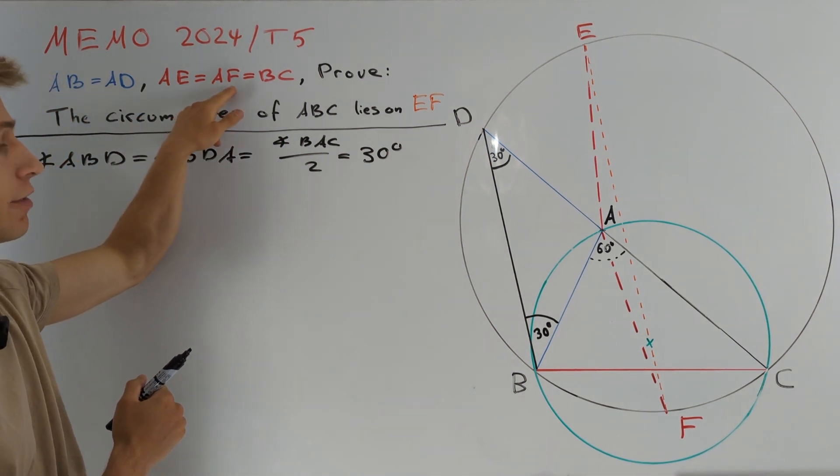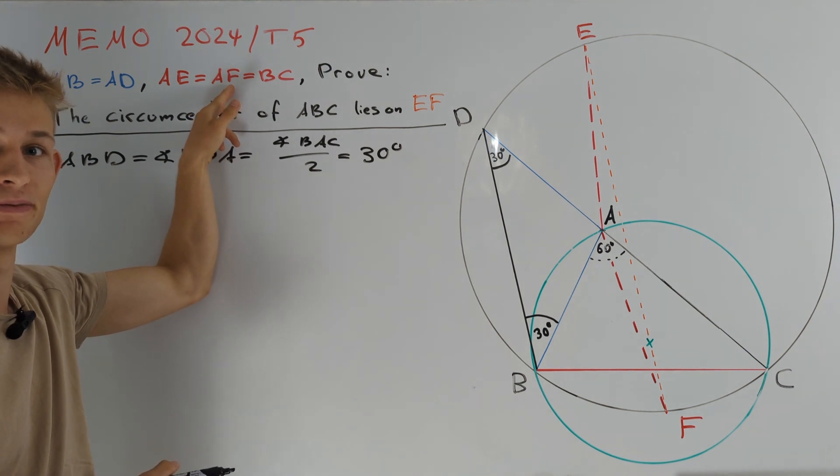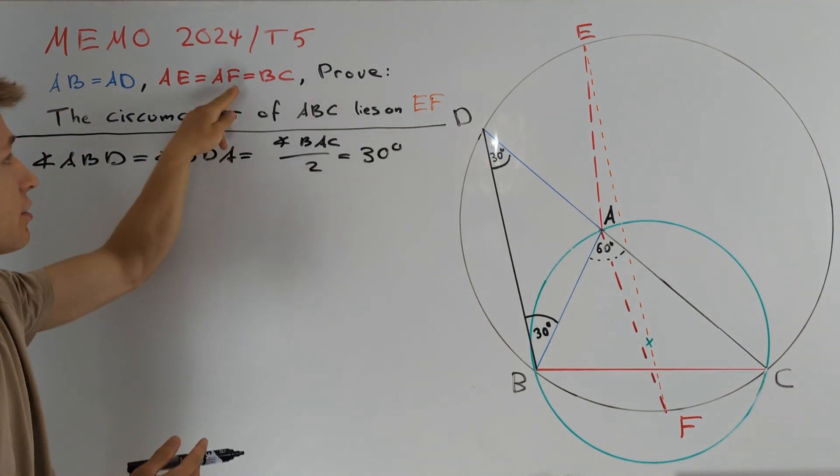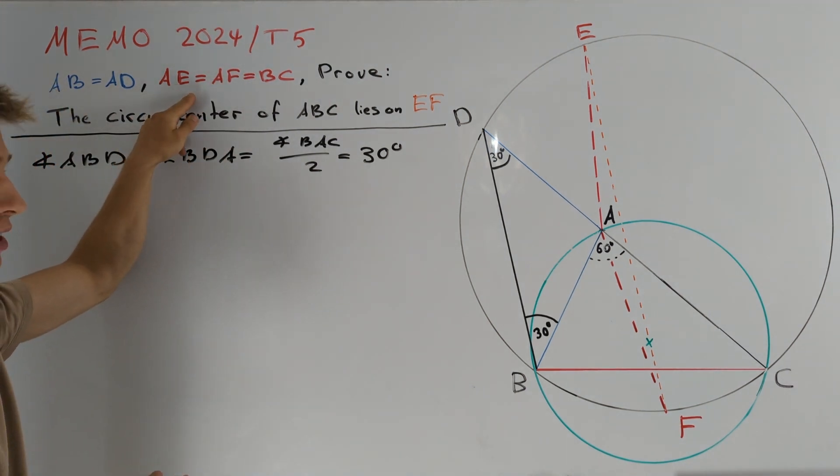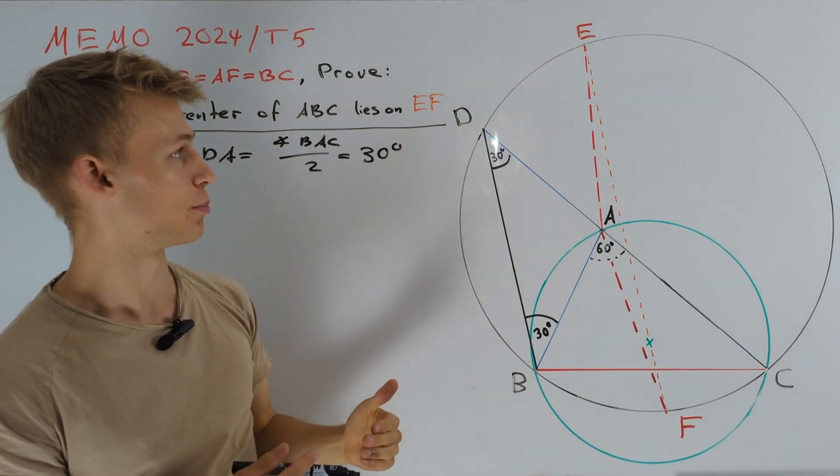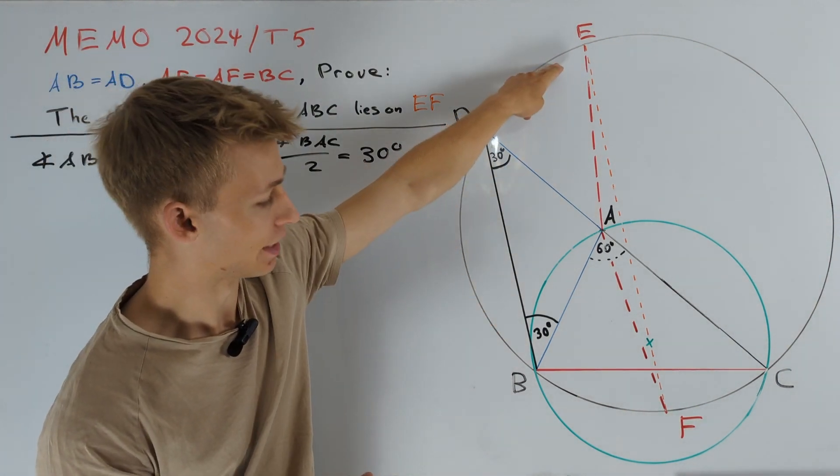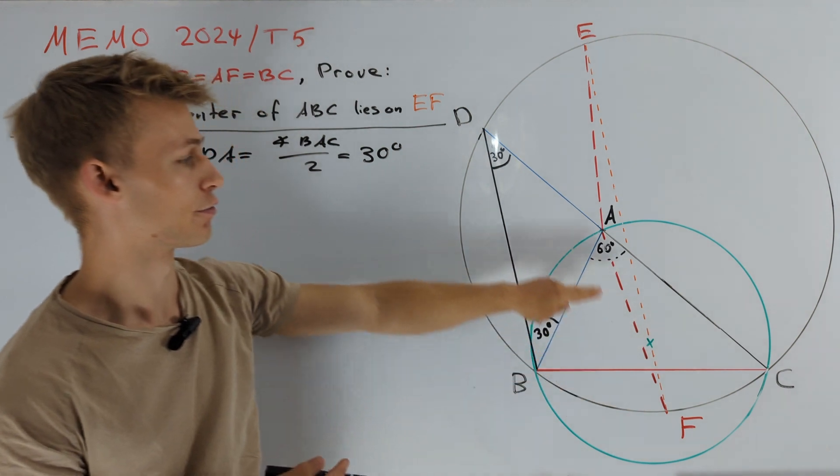But the good thing is that these two segments have a common endpoint and therefore we know that the perpendicular bisector of line EF passes through point A.